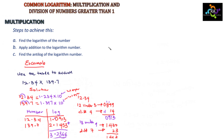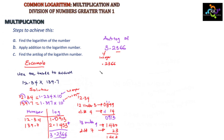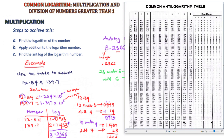Now find the anti-log of 3.2366. The integer part is 3 and the fractional part is .2366. In the anti-log table we use the fractional part — look up 23 under column 6, with a difference of 6.